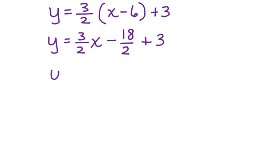Now let's simplify one step further. y equals 3/2x minus, and we have 2 divided into 18 is 9, plus 3. Now we can combine like terms.